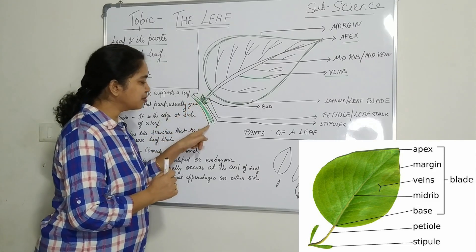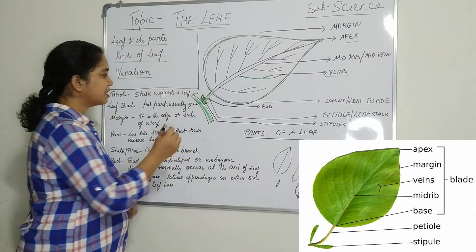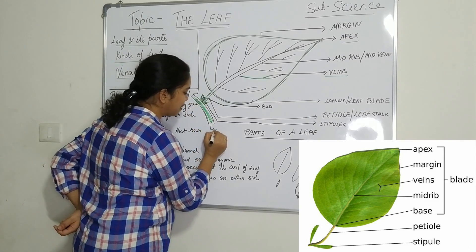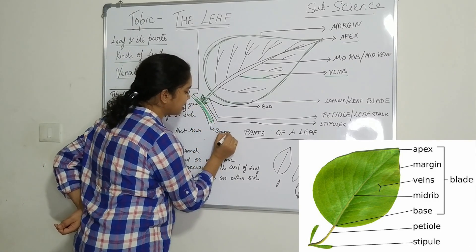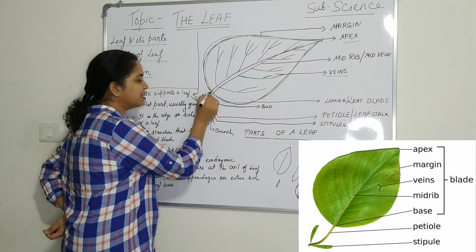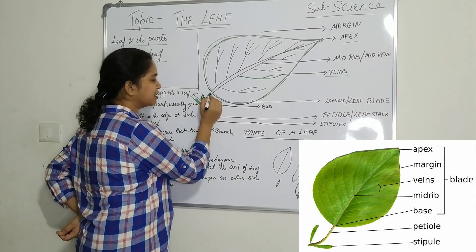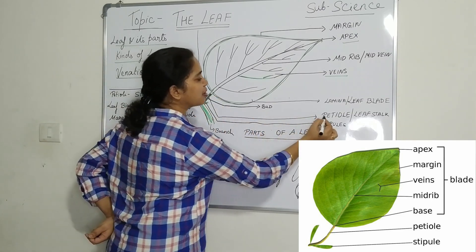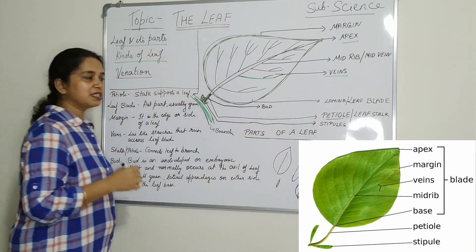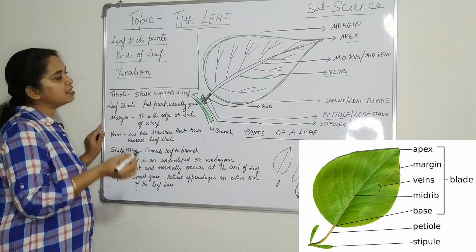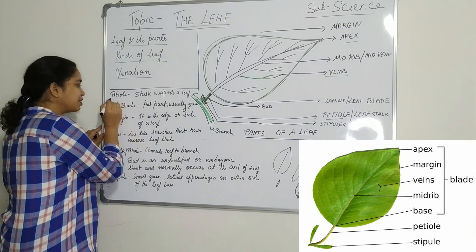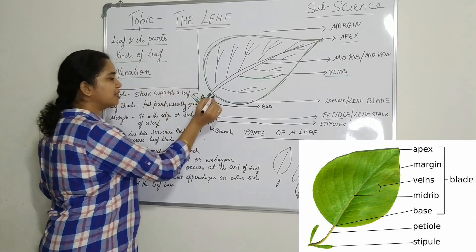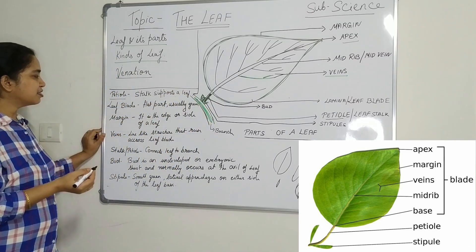The leaf is attached to the branch. You can see this leaf is attached to the branch by a stalk-like structure. This stalk-like structure is called the leaf stalk or the petiole. The petiole is the stalk that supports a leaf.